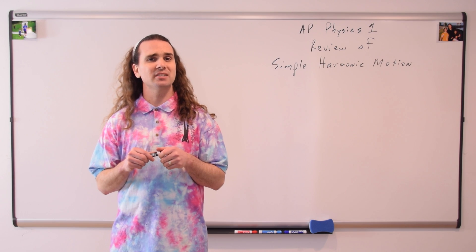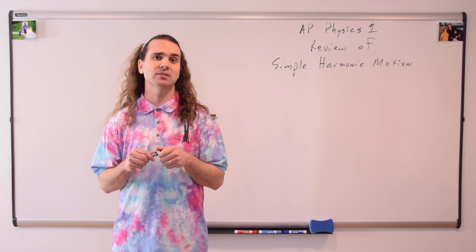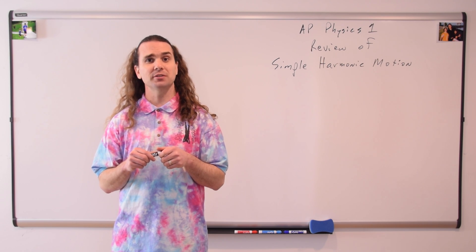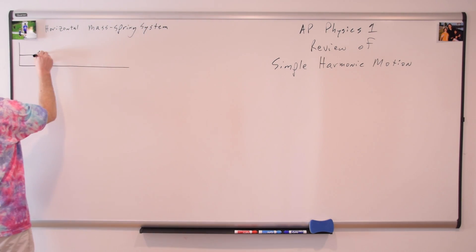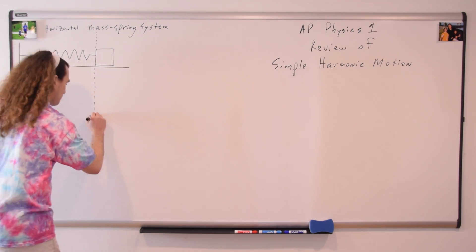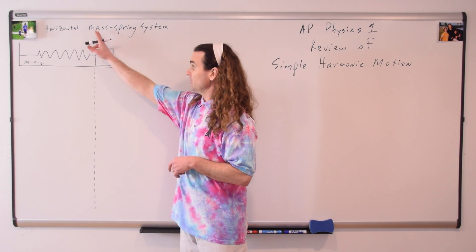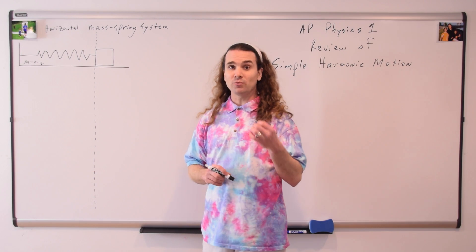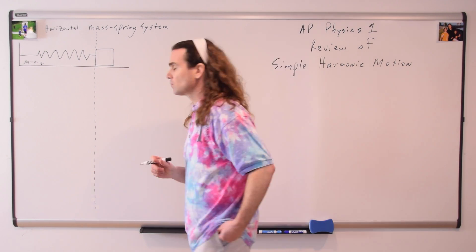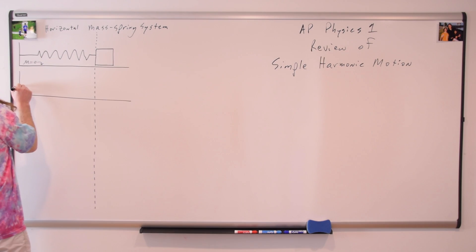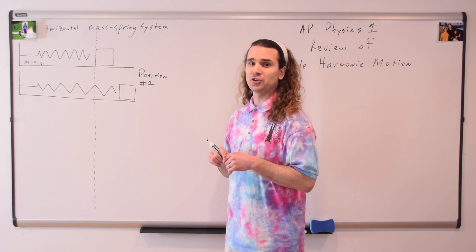A typical example of an object in simple harmonic motion is a horizontal mass-spring system on a frictionless surface. This is a mass attached to a spring. Currently it is in the equilibrium, or rest, position. And if I take that mass and pull it to the right, we can call this position number one.